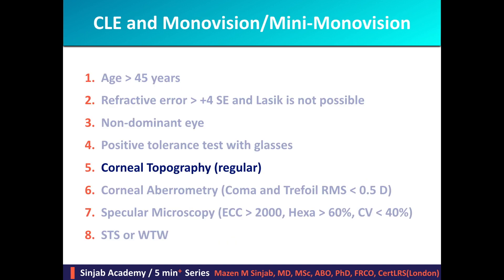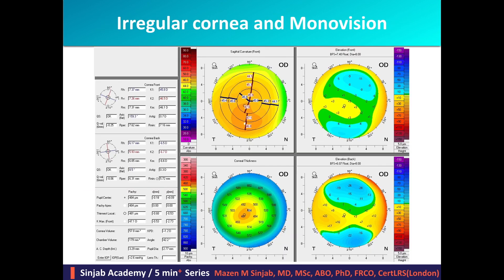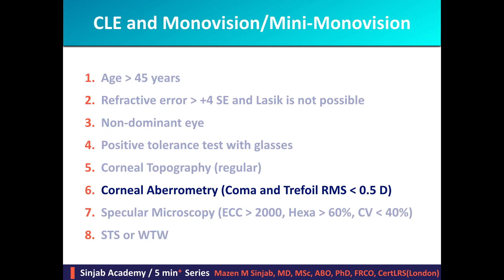To get optimum results, corneal tomography should be regular. However, mild irregularities are not a contraindication for this method, but this should be confirmed by corneal aberrometry. Corneal aberrometry is mandatory for two reasons: to study corneal spherical aberration, and to study corneal coma and trefoil.